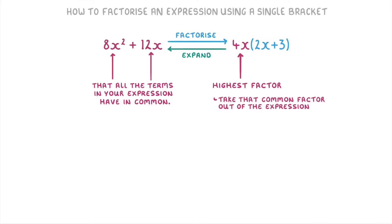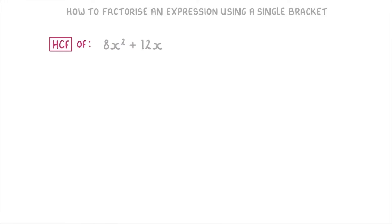Once you get used to it, factorizing can become quite easy and you can start to skip a few steps. But in this first example, we're going to take it slowly and fully explain everything. So to factorize 8x squared plus 12x, the first thing we need to do is find the highest common factor of the 8x squared term and the 12x term. The best way to do this is to start with the numbers, and then look at any letters one by one.